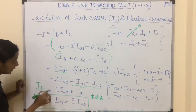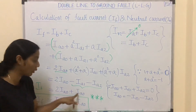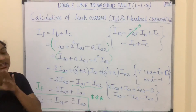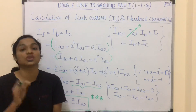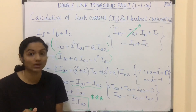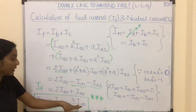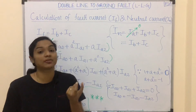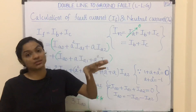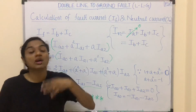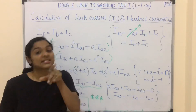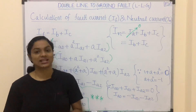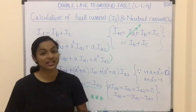The final value for fault current IF is 3·Ia0. In LLG fault, neutral current and fault current are both equal to 3·Ia0. The value of Ia0 derived from the sequence network is minus Ia1 times Z2 divided by (Z2 plus Z0). So this concludes the analysis of LLG fault.